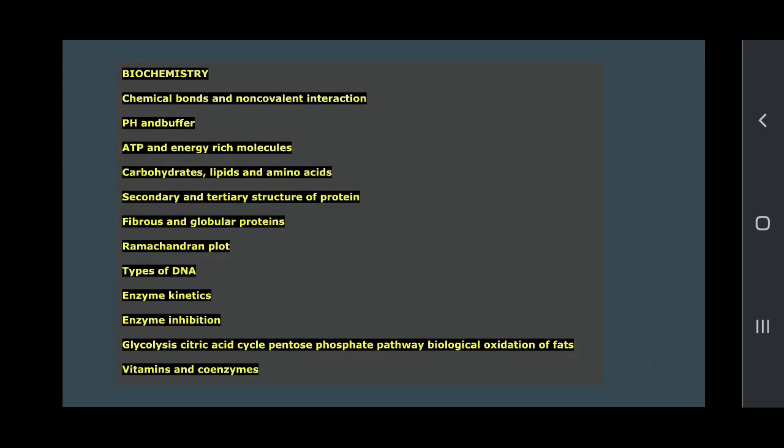The first important unit is biochemistry and in that these particular topics are highlighted as well as frequently asked. First is chemical bonds and non-covalent interactions, then pH and buffer, then ATP and energy rich molecules, carbohydrates, lipids and amino acids, then secondary and tertiary structures of protein, fibrous and globular protein, then Ramachandran plot.